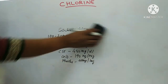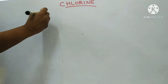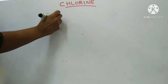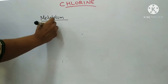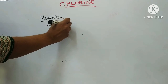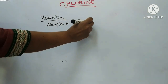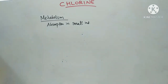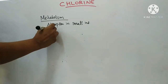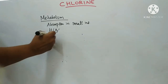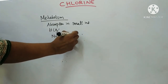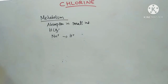Coming to the metabolism of chlorine: absorption takes place in the small intestine. This chloride uptake depends on the exchange process with bicarbonate. At the same time, there will be sodium exchange for hydrogen ion. That is the absorption.